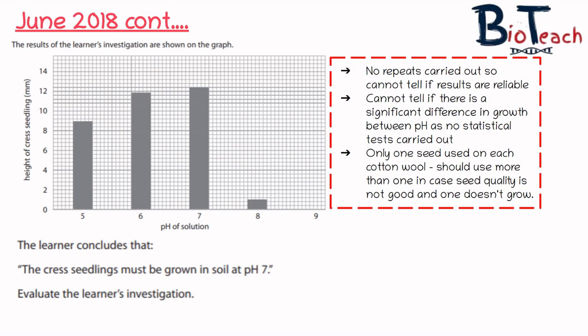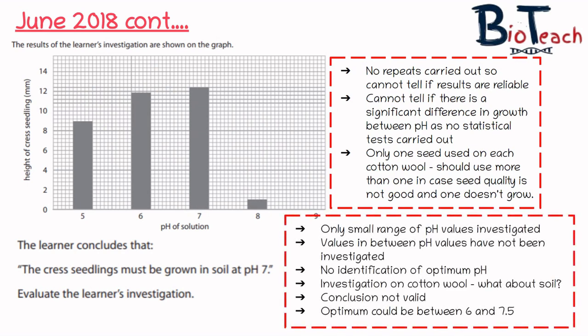The conclusion stated that cress seedlings must be grown in soil at pH 7. However, the experiment was done in cotton wool, not soil — so that conclusion isn't supported by the method. We also can't confirm pH 7 is optimal since only a small range was tested and intermediate values weren't investigated. The conclusion isn't valid: the optimum pH could be anywhere between 6 and 7.5, and testing in soil would be a different experiment entirely.